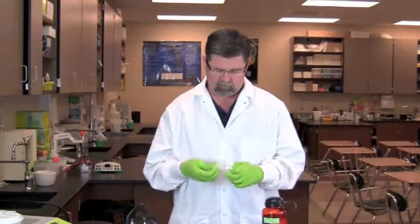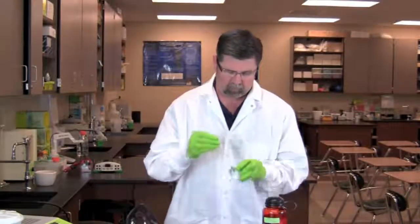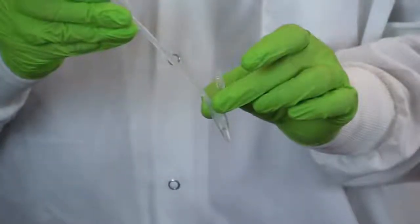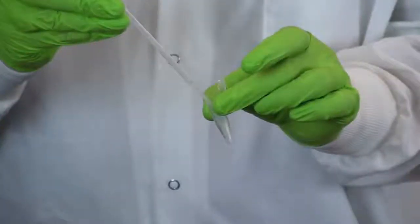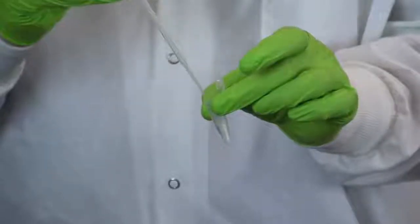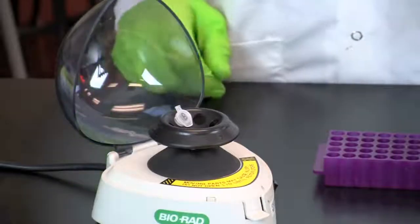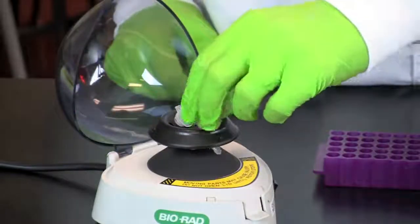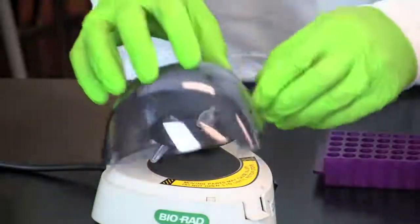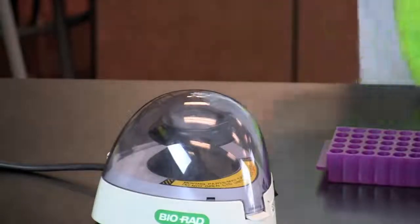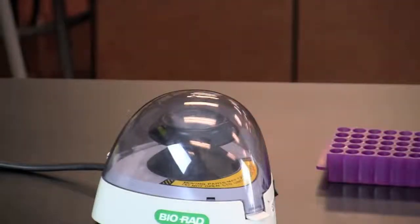Pipet 1 milliliter of mouth rinse into a 1.5 milliliter flip-top microcentrifuge tube. Place the tube into the microcentrifuge in a balanced configuration. Place the hinges of the tubes facing outward so that the pellet will be easy to locate after spinning. Centrifuge at maximum speed for 2 minutes. If you are using a mini-centrifuge that can only reach 2,000 g's, centrifuge for 5 minutes.